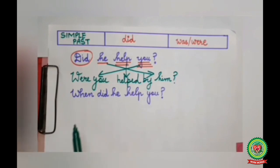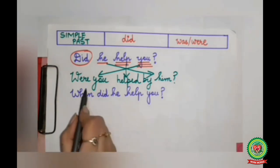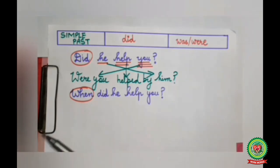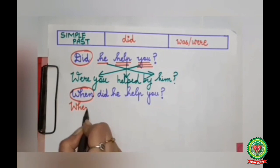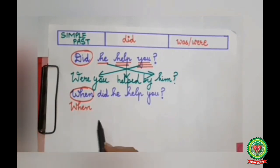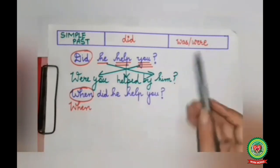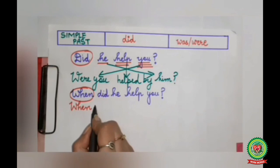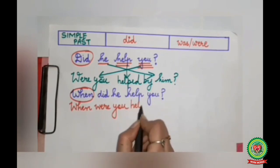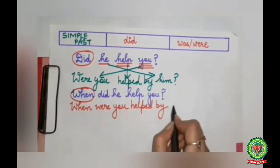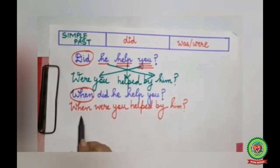The second sentence: 'When did he help you?' 'When' is your question word. Whenever you have question words like 'when', 'where', 'why' in the beginning, they will remain the same — only 'who' changes into 'by whom'. So 'when' will remain the same. After 'when', we use the helping verb 'was' or 'were'. 'You' will come after the helping verb, 'help' will change into 'helped', and 'he' becomes 'him'. The passive becomes: 'When were you helped by him?'